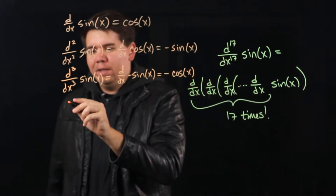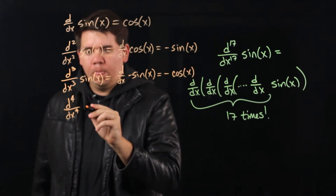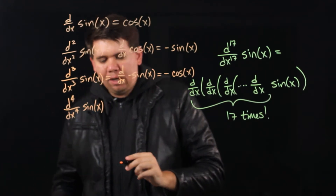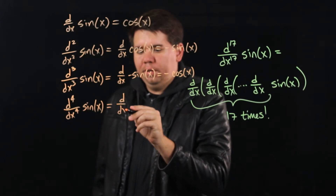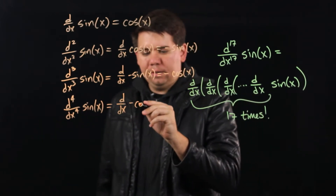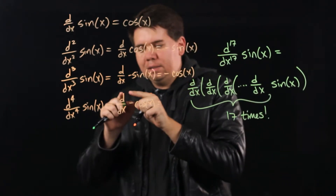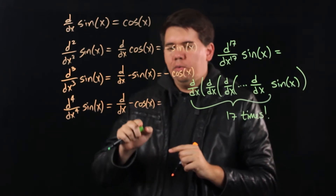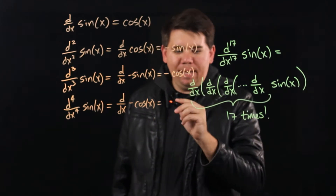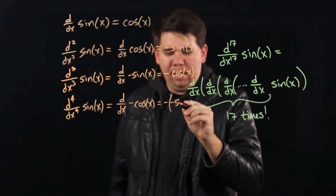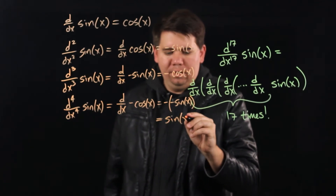Now if I want to find the fourth derivative of sine of x, that's just the derivative of the third derivative — the derivative of minus cosine of x. I can pull that minus out and get minus the derivative of cosine of x, which is minus times minus sine of x, giving minus minus sine of x, which is of course just sine of x.